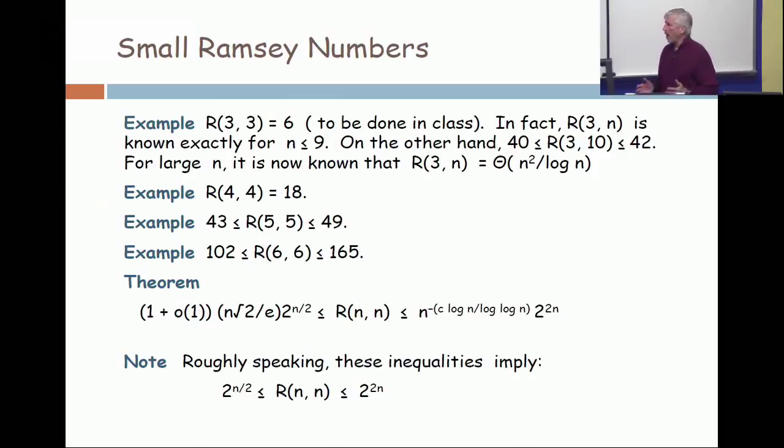For large n, the bounds that are known are between 2 to the 2n and 2 to the n over 2.